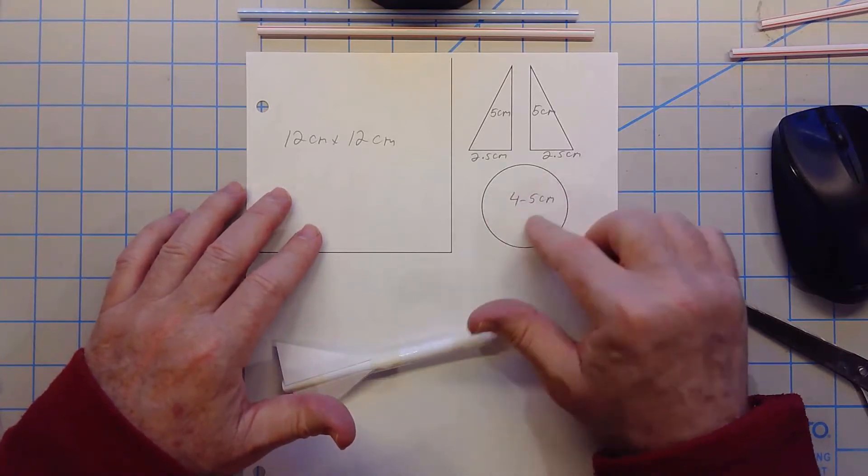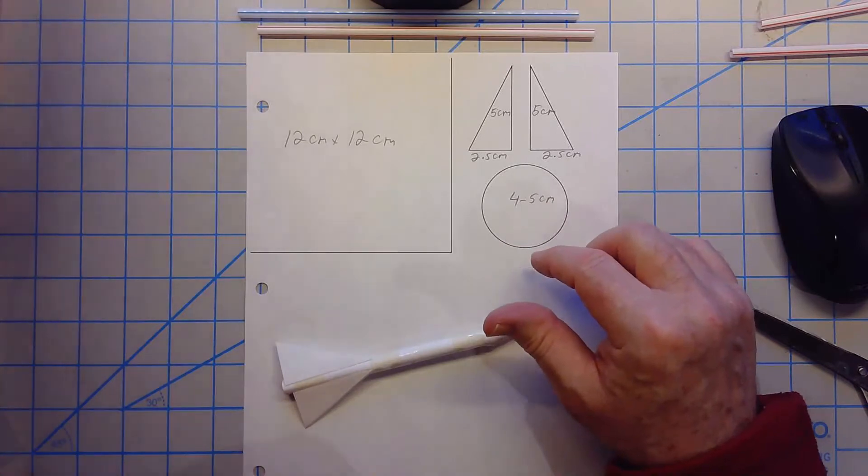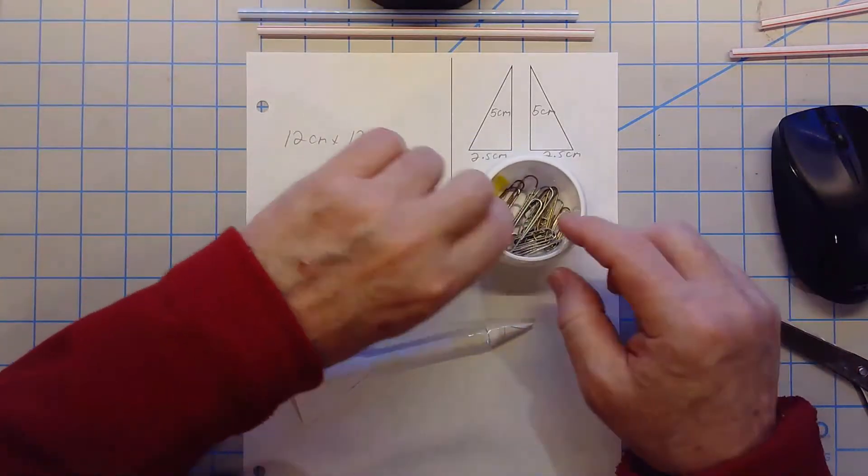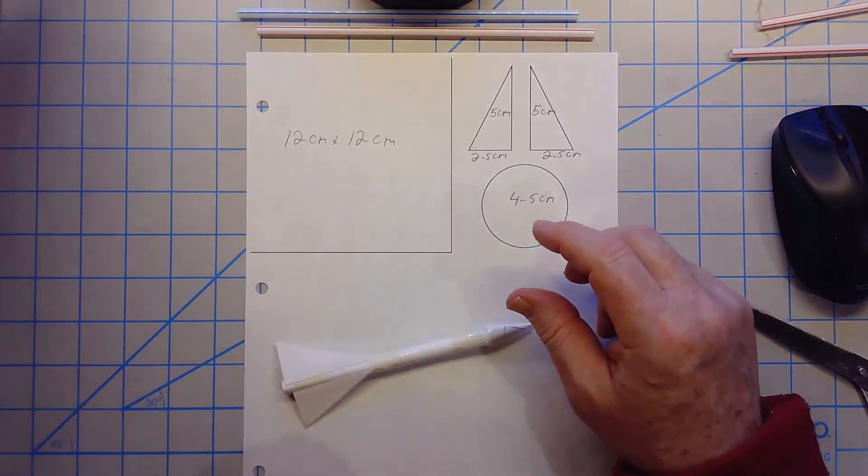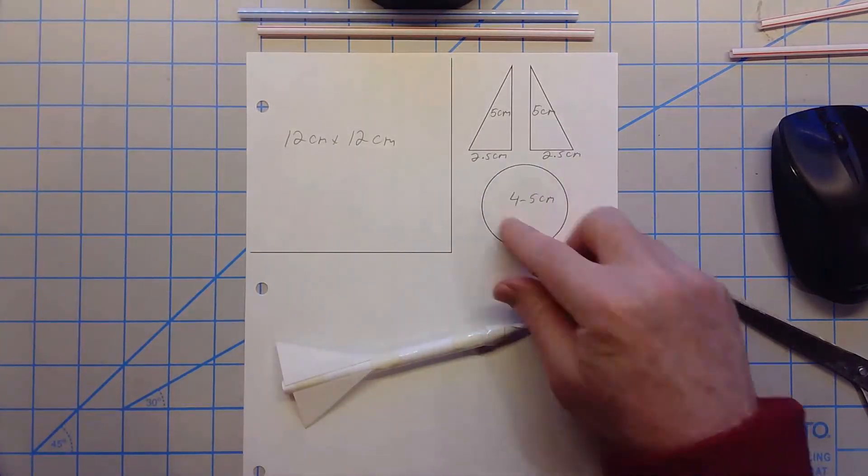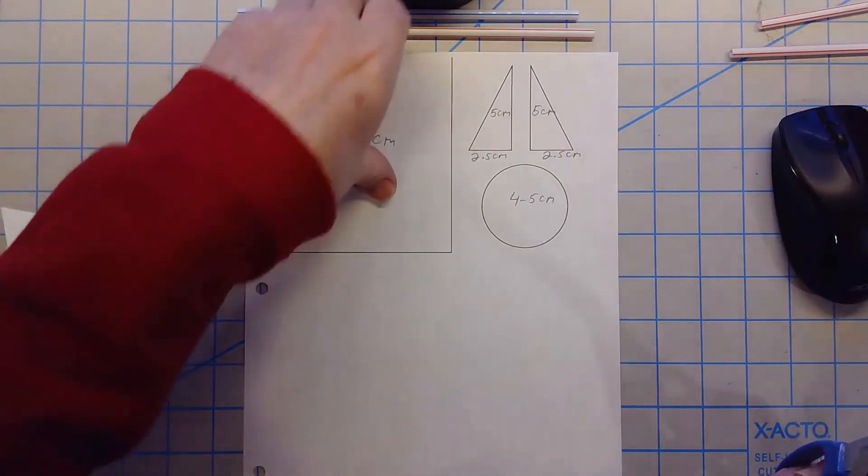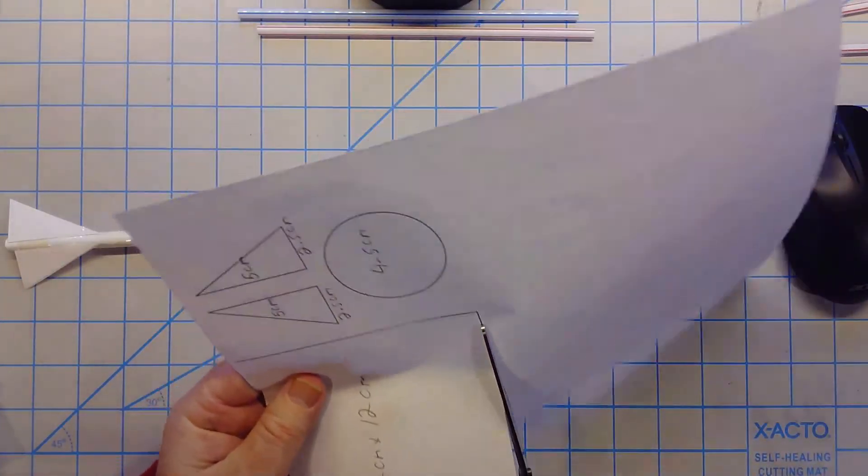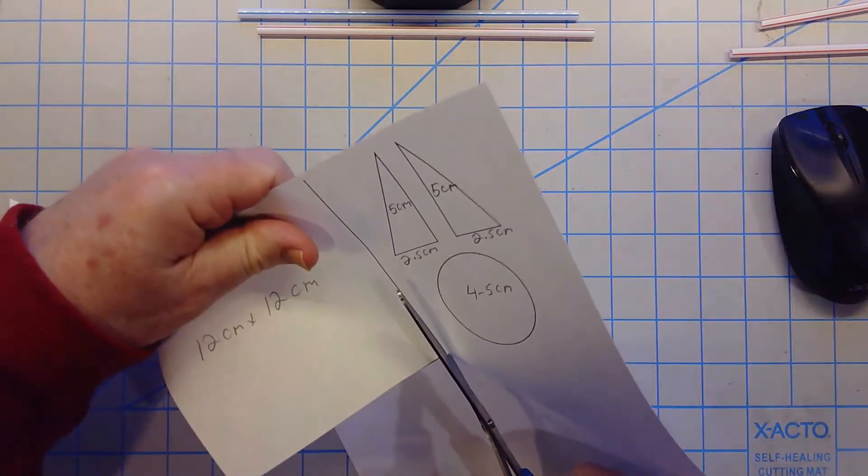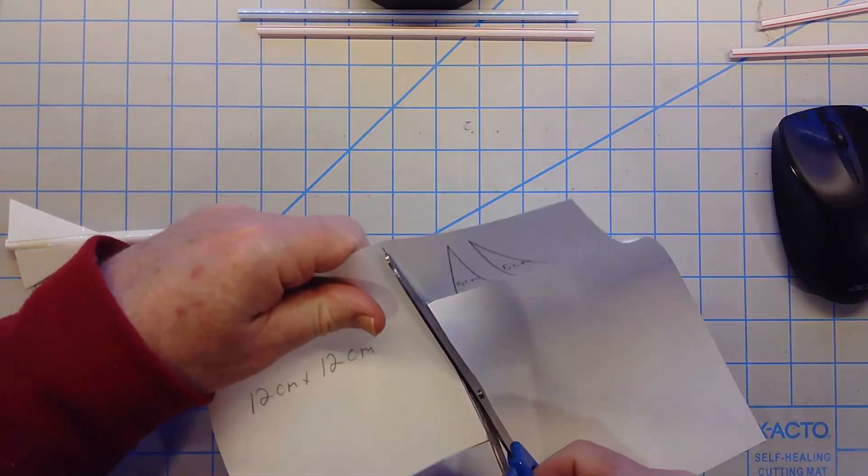You can use anything to trace it and you can also use a compass if you want to draw a circle. I just used something with a circle on the bottom and traced it. You may end up cutting it shorter when you use it but that's okay. So let's cut this out reasonably square.